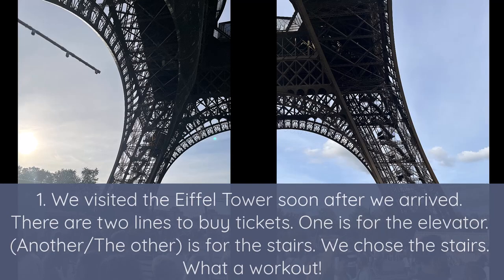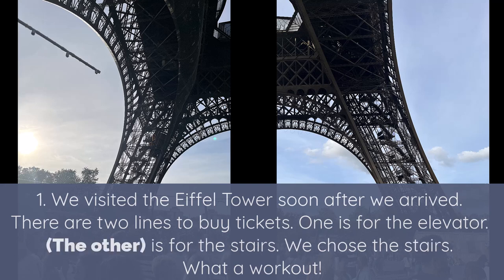Let's choose another topic — a different one. I'd like to tell you a little bit about my trip to Paris. Complete my sentences with the correct words. One: We visited the Eiffel Tower soon after we arrived. There are two lines to buy tickets. One is for the elevator; the other is for the stairs. We chose the stairs — what a workout!